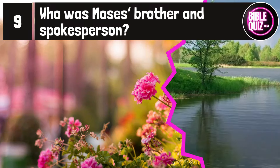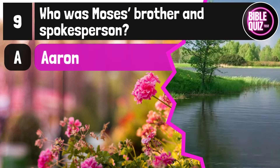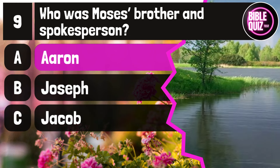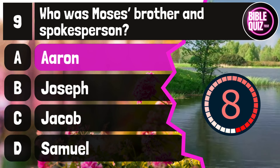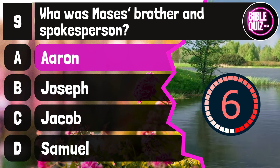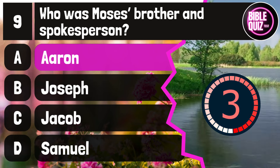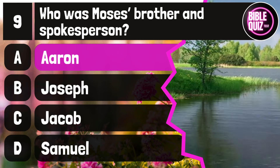Question number 9. Who was Moses' brother and spokesperson? Option A: Aaron. Option B: Joseph. Option C: Jacob. Option D: Samuel. Time to think. The answer is option A: Aaron.